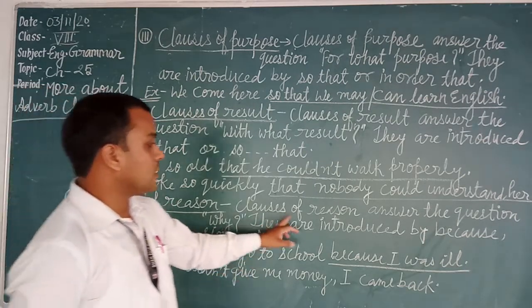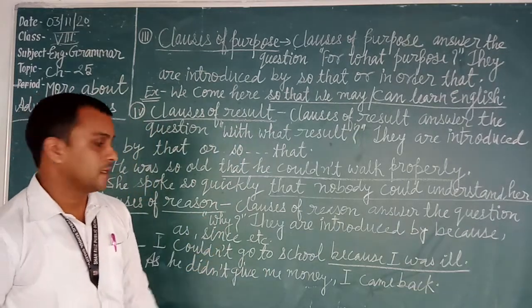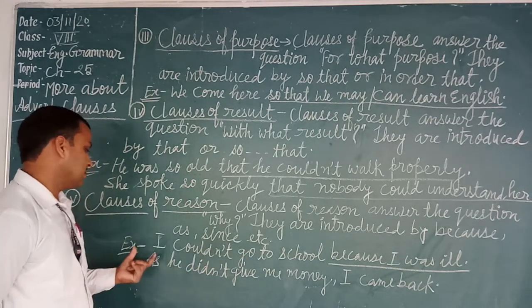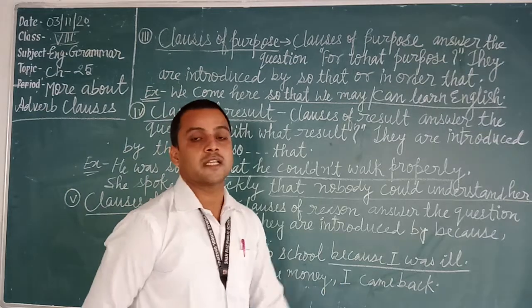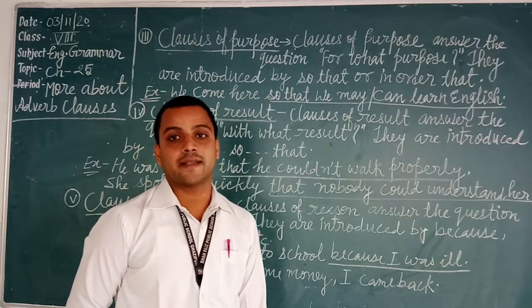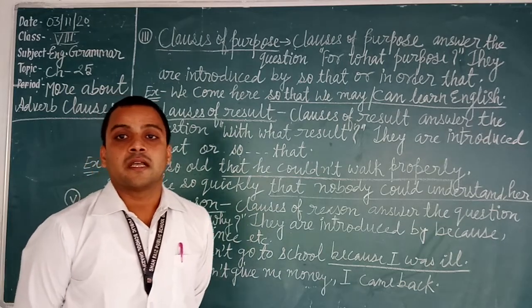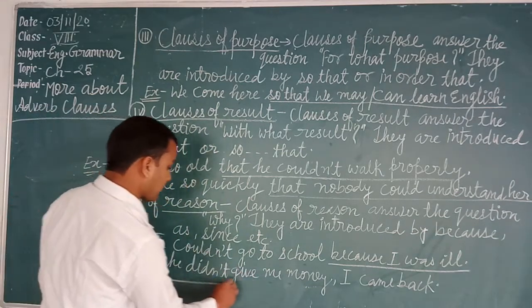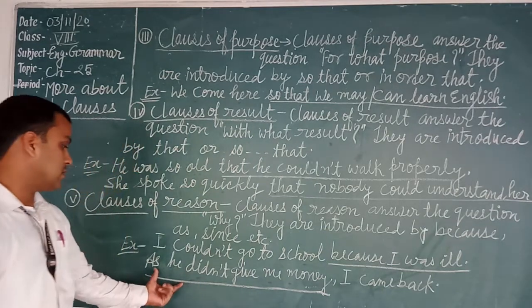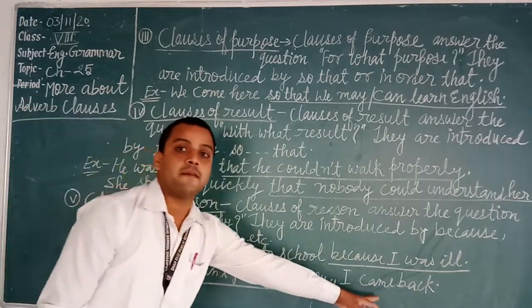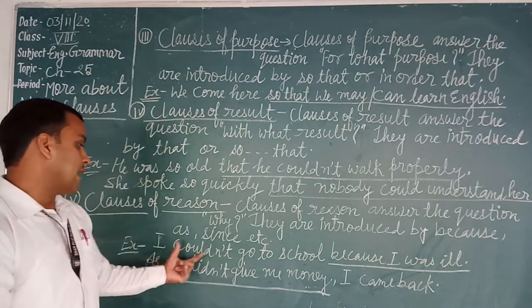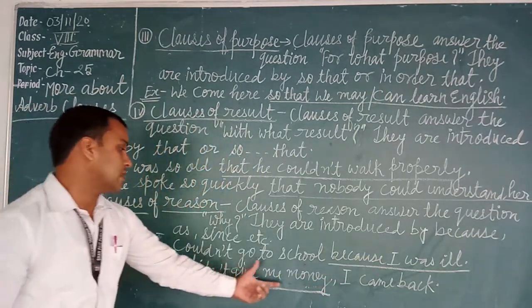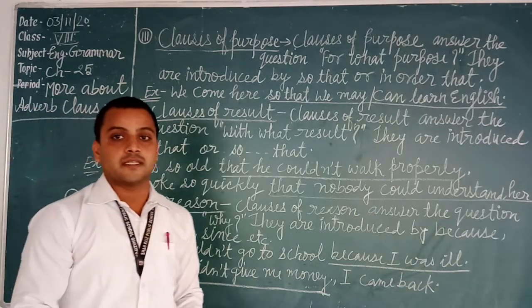The fifth kind is clauses of reason. A clause of reason answers the question 'why.' They are introduced by 'because,' 'as,' or 'since.' For example: 'I could not go to school because I was ill.' Another example: 'I came back as he did not give me money.' These show clauses of reason.